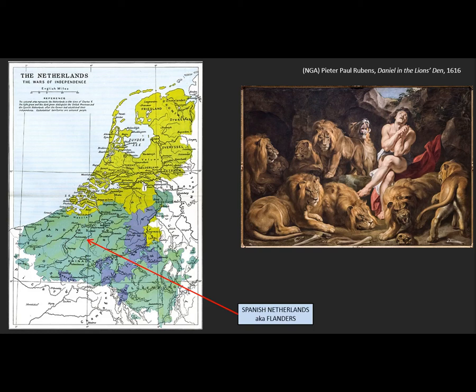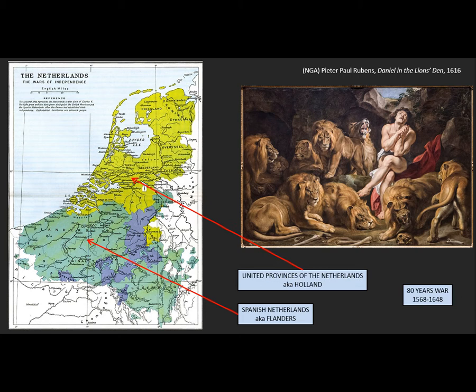In our previous screencast, we were talking about art in the Spanish Netherlands, or what we often call Flanders — the southern part of the Netherlands, the Low Countries. During the Baroque period, this region was at war with the northern part of the territory, the United Provinces of the Netherlands, which is Holland. This was a religiously based war: the Spanish Netherlands was Catholic, the United Provinces were Protestant, and we refer to it now as the Eighty Years' War because it literally lasted 80 years.